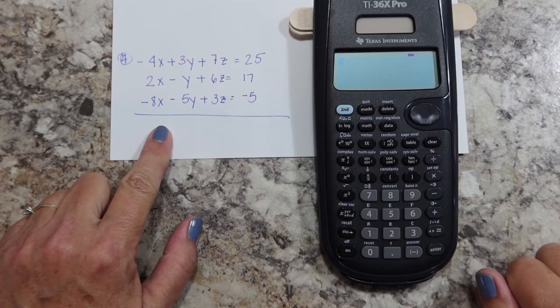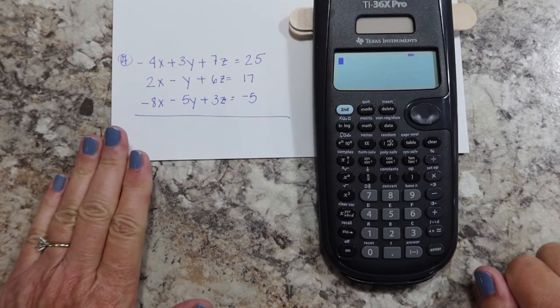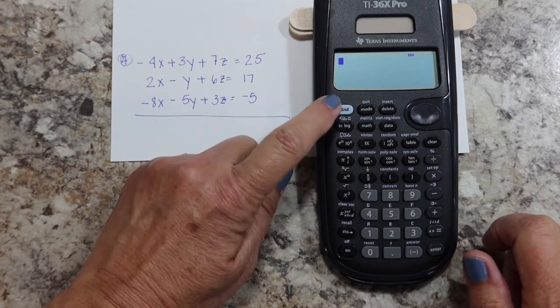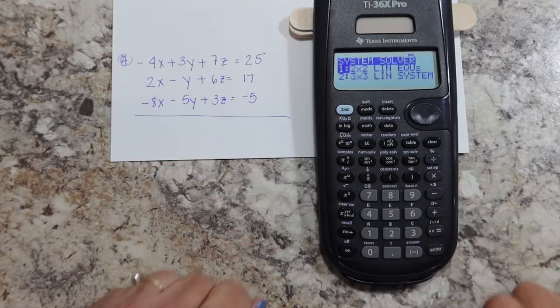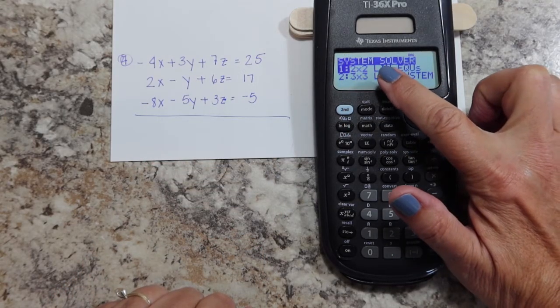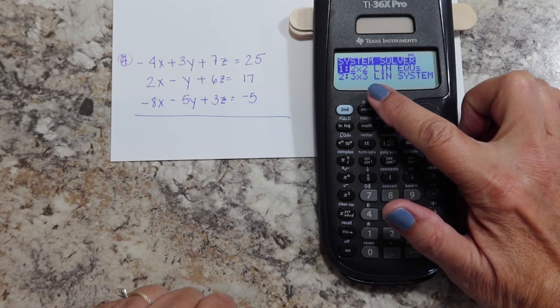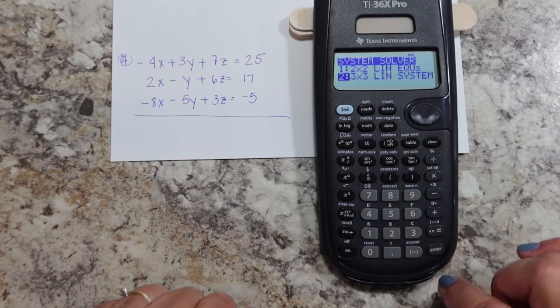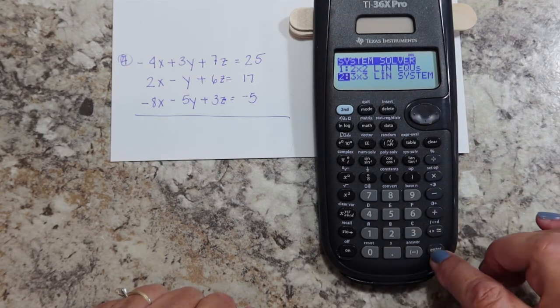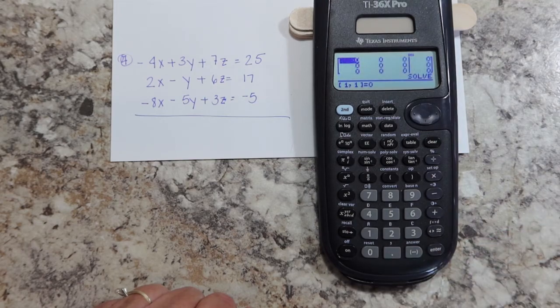Now for a three by three. This is in standard form already, so I'm good to go. We're going to hit second, system solver again. Now I don't want the two by two, I want the bottom one, three by three. You can either scroll down to it and hit enter, or you can hit the number two button. Either one will get you there.